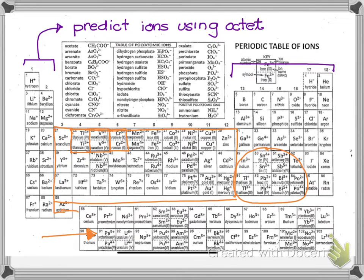Just because you're a transition metal doesn't mean you can form more than one cation — there are about 14 of them that do. If you have to take more chemistry, you'll end up memorizing the more common transition metals and post-transition metals that form more than one cation. I have a list in the study guide of a few that I recommend you memorize to make things easier.